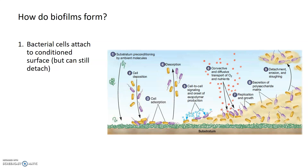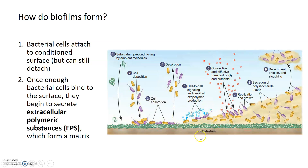Biofilms form on surfaces that are conditioned or have protein molecules attached to them. Bacterial cells can undergo deposition and adsorption — they bind to one of these surfaces. Initially, when just a few bacterial cells are adsorbing to a surface, they can still undergo desorption or detachment, creating a transient attachment. Some will leave and some will stay. As bacteria accumulate, they reach a quorum — a certain threshold of cells — and once enough cells are present, they begin signaling each other to secrete extracellular polymeric substances, which start to form the sticky, semi-solid matrix.